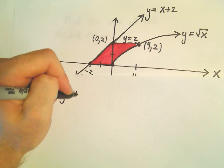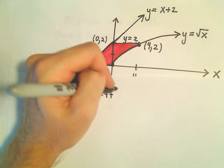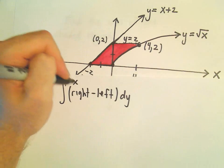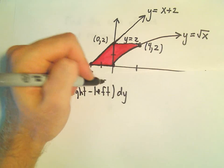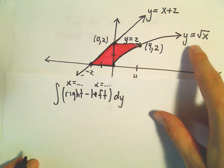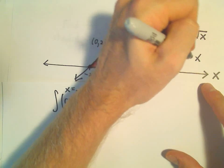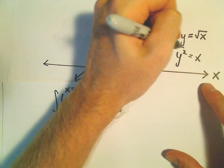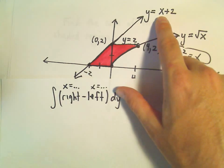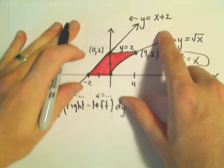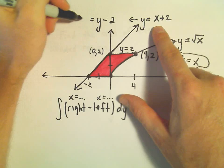So, again, to do that, we do the right minus the left curve. And as we said before, we have to make these curves, we have to write them in the form x equals. Okay, so we've got y equals square root of x. Well, we could just square both sides, so that would give us x equals y squared. So we'll use that version. And then y equals x plus 2. Well, equivalently, we can just rewrite that and say y minus 2 equals x.